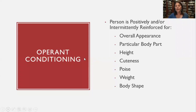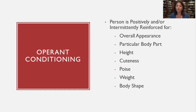Let's look at what operant conditioning means. This is where the individual starts developing BDD. We have a child who is being positively reinforced — consistently or intermittently — for their appearance. Neighbors, parents, and schools comment on the child's appearance or particular body part: their height, how cute they are, how poised they are, their body shape.